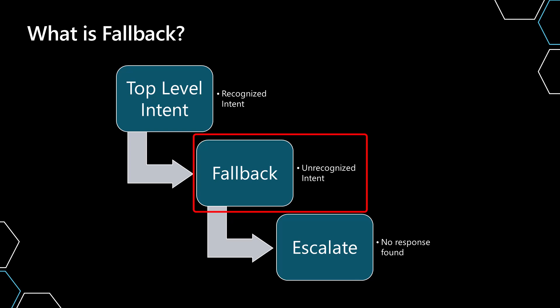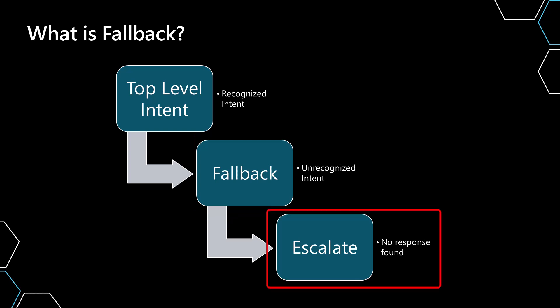In Copilot Studio, fallback is represented as an unrecognized intent. This is commonly used as a place to wire in checking a knowledge base or generating an answer from a RAG pattern. That is where that logic falls. Then there is the concept of churn detection, which is what happens if you don't get an answer through any of these different mechanisms, or someone is asking and not getting an answer numerous times.